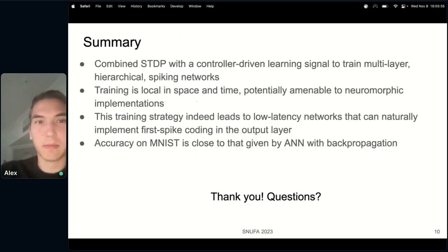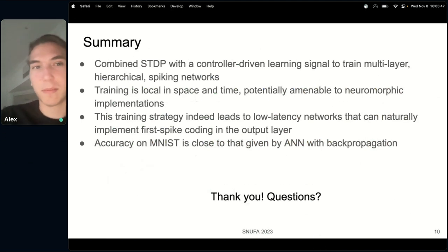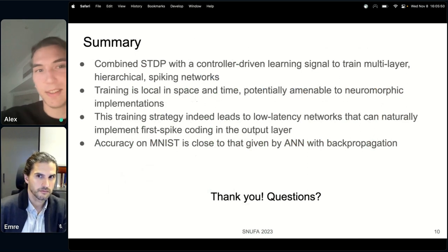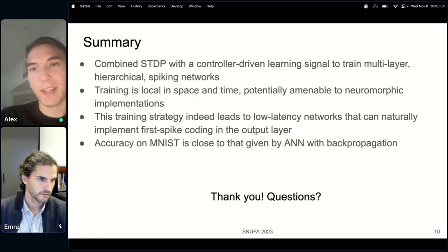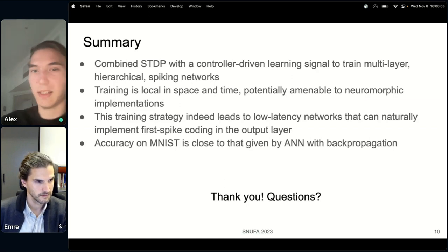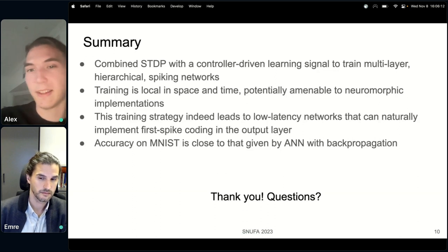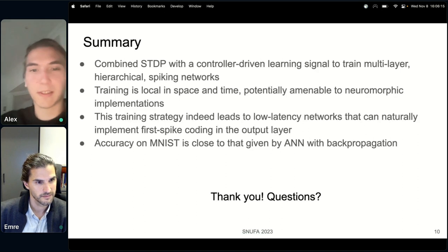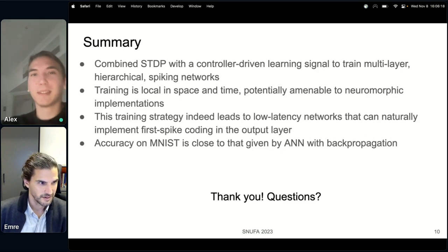So in summary we evaluated a new algorithm that combines spike time dependent plasticity, event based spiking neurons and a method that is local in space and time to train multi-layer hierarchical networks. This is maybe potentially interesting for neuromorphic implementations in the future. It creates low latency networks, it implements first spike coding, and accuracy so far is close to ANNs with backpropagation. So thanks, let's go to questions.